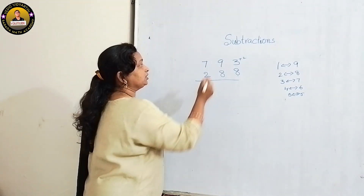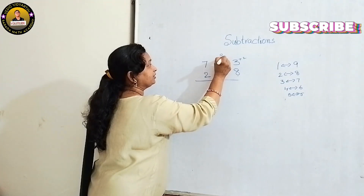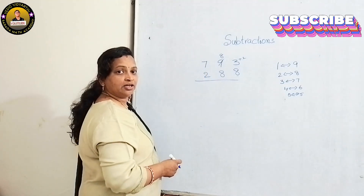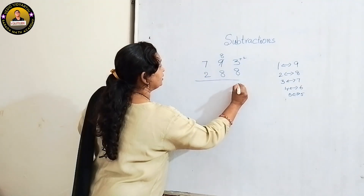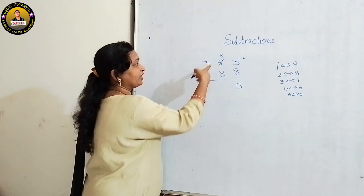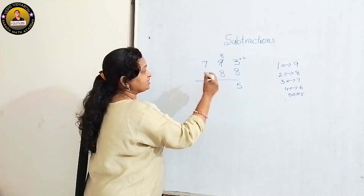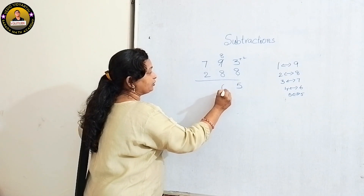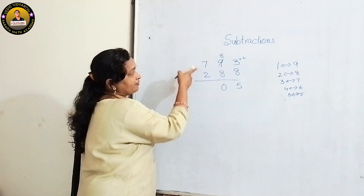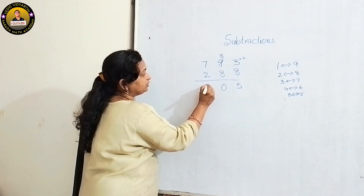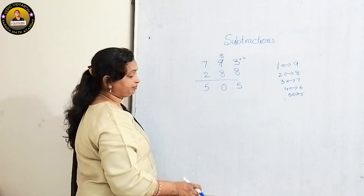3 plus 2 equals 5. Then decrease 1 from the previous number, that is 8. Now for the tens place: 8 minus 8 is 0. Then for the hundreds place: 7 minus 2 is 5. Wait — the answer is 505. Let me show you another example.